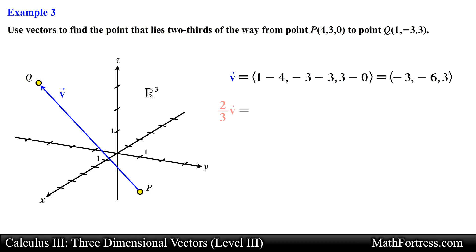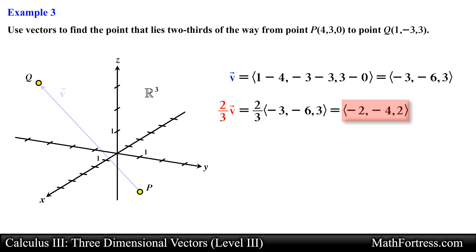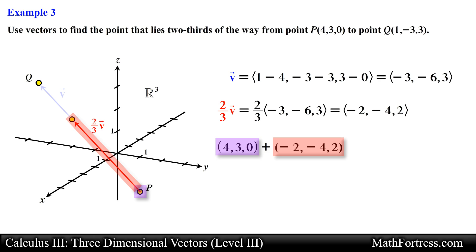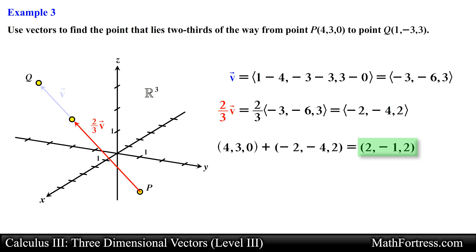Next let's scale this vector by a factor of two-thirds, obtaining the scaled components. This scaled vector essentially tells us the difference between point P and the point that is two-thirds away from point P. So all we need to do is take point P and add the components of the scaled vector. Doing that we obtain the final coordinate equal to 2, negative 1, and 2.